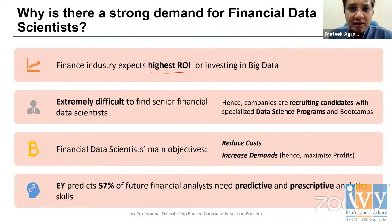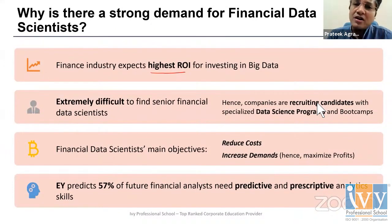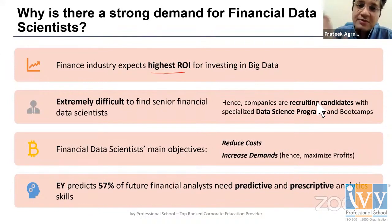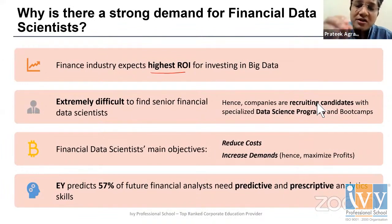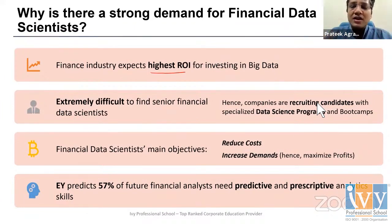An audience member doing an MBA while pursuing a data science course is told that's a great combination — MBA allows specialization in marketing analytics, financial analytics, HR analytics, logistics analytics, and more. Another question about blockchain's impact on data science is noted; the speaker will try to address it if time permits, noting they're not a blockchain expert but are aware of developments in the blockchain space, including cryptocurrency.